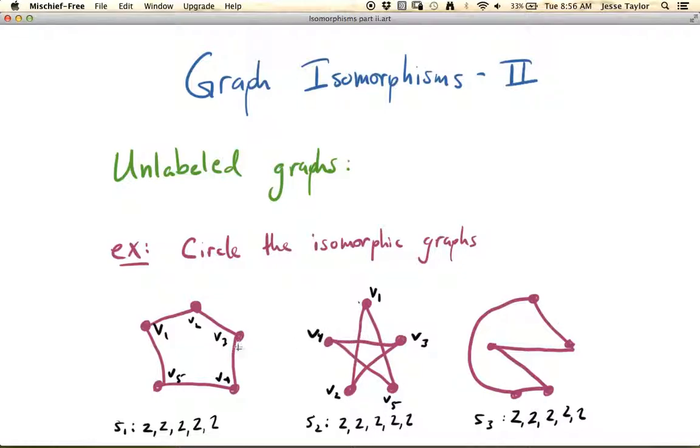Let's see. Okay, so v3, v4, yep. v4, v5, yes. v2, v3, yes. Okay, so you can see that these two are going to be isomorphic. Okay, so we can start by circling these two. They are isomorphic.